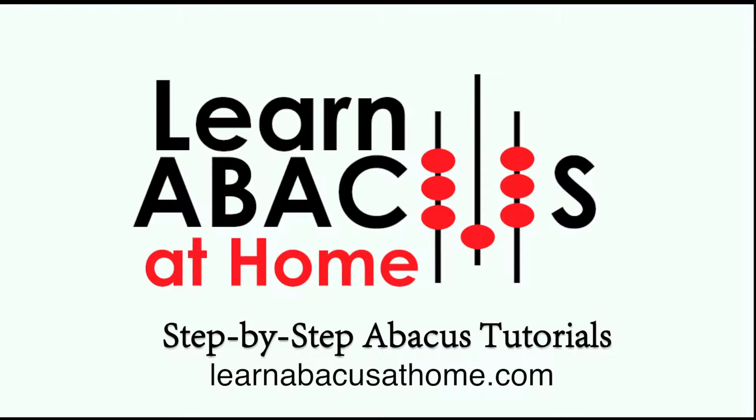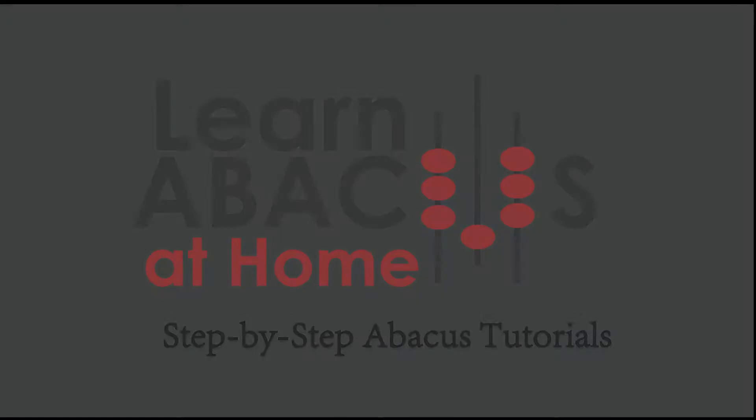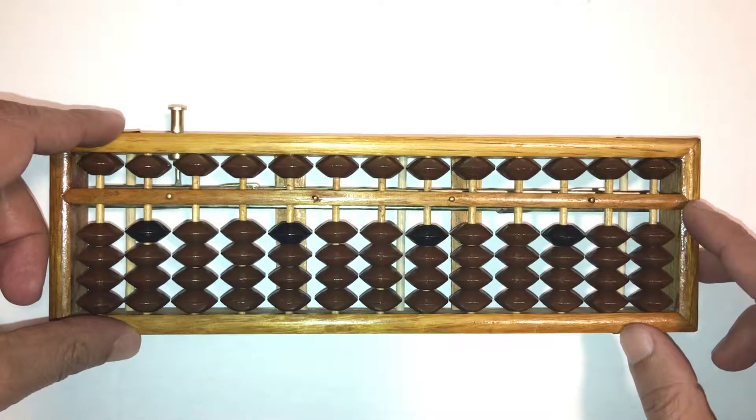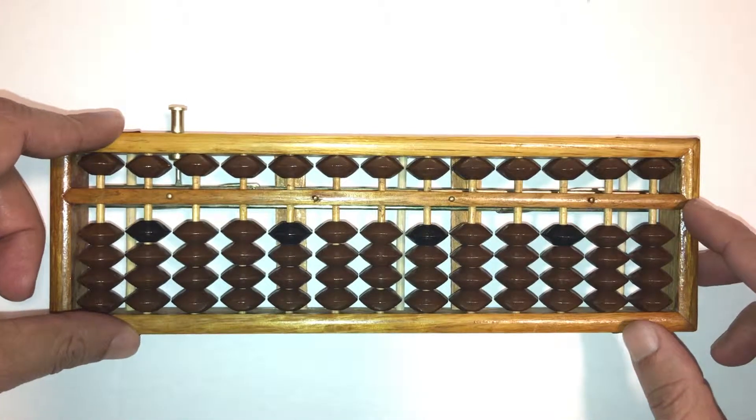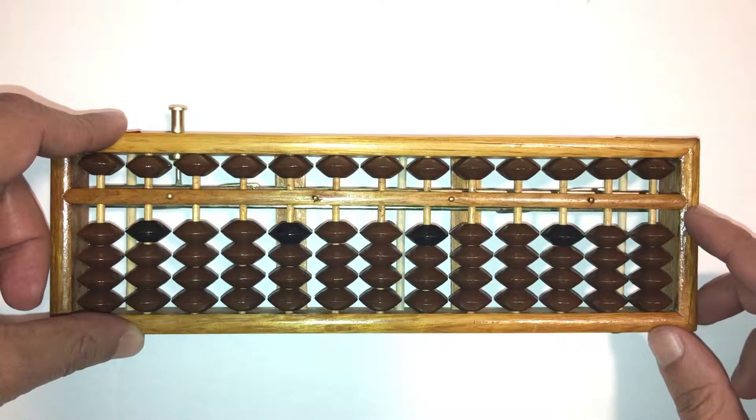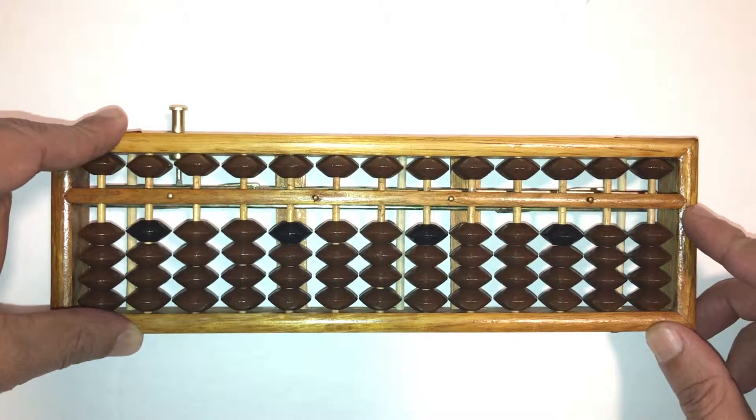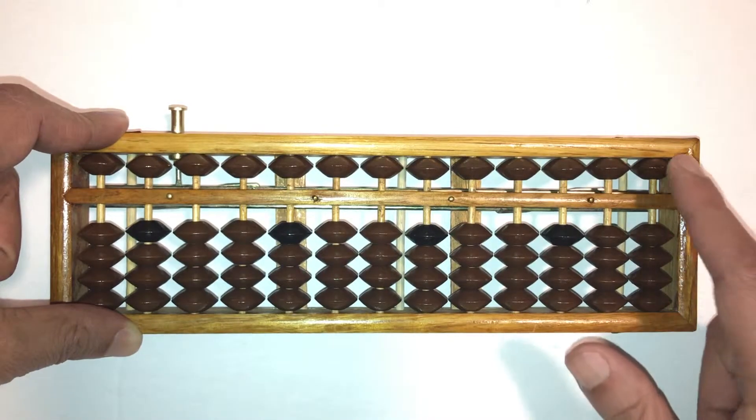Learn abacus at home step-by-step abacus tutorials. You've probably noticed that in all the work we've done in our lessons so far, our answers only contain the digits 0, 1, 2, 3, 4, and 5. In other words, the answer contains either the upper beads by themselves or the lower beads by themselves.